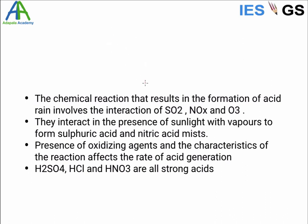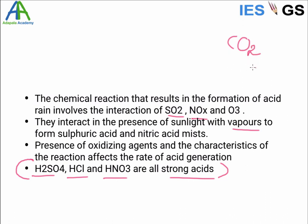How is acid rain formed? The oxides react with water vapor to form acids. The strong acids are sulfuric acid, hydrochloric acid, and nitric acid — these are the main components of acid rain. Other pollutants like carbon dioxide can form carbonic acid, but that does not contribute to acid rain because it is a weak acid.